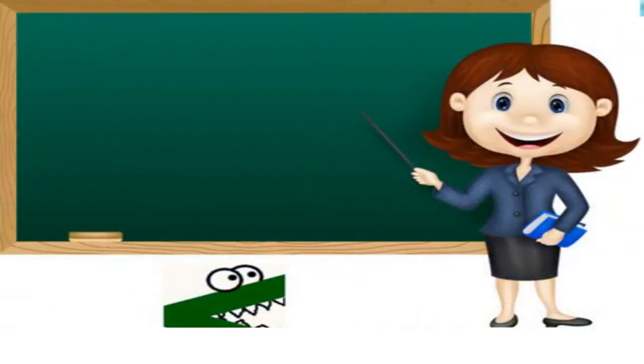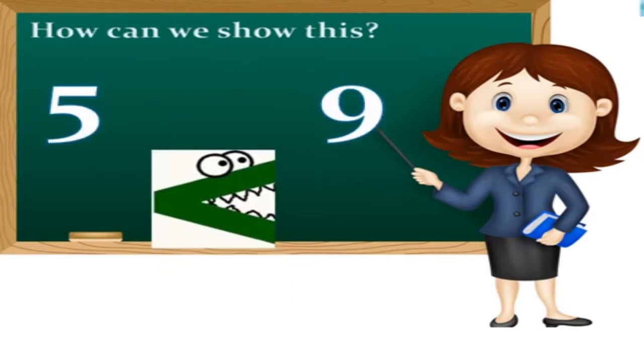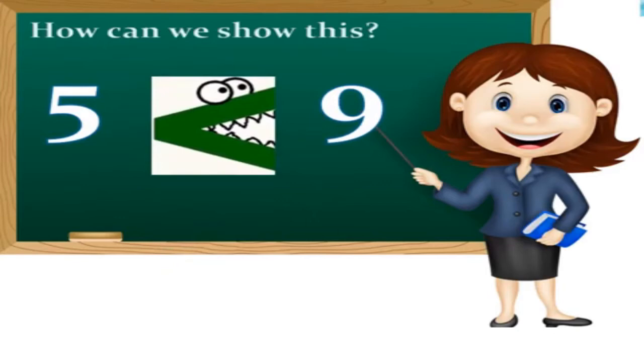Now, let us look at the board and see how we will compare numbers using Charlie's mouth. Here we have the same two numbers, five and nine. Which one is greater? Number nine. So, we will open Charlie's mouth towards number nine.